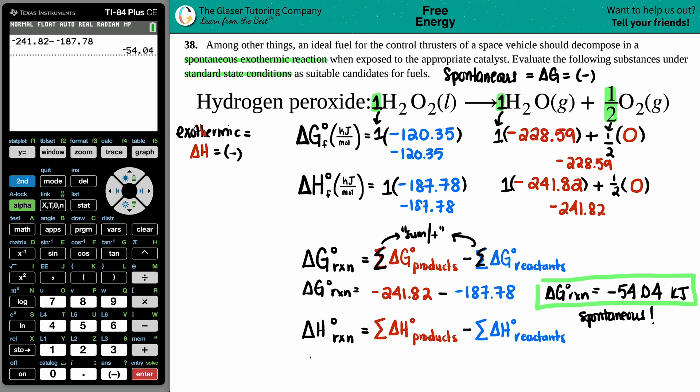Sum up the products because you have two of them, but you know, same thing as before, this would still be negative 241.82 because you're adding it to zero, and this is just negative 187.78. We have our numbers, let's throw it in. Delta H for the whole entire reaction equals the sum of the products negative 241.82, and I just made, I just noticed that I made a mistake. Did anybody catch that? Was anybody yelling at me? I accidentally took the negative 241 and put it in for my delta G.